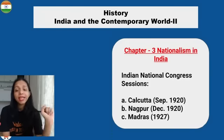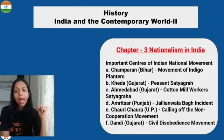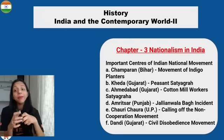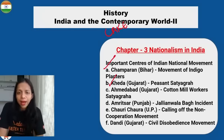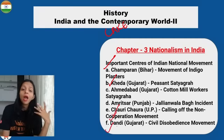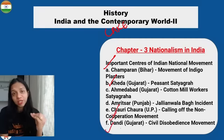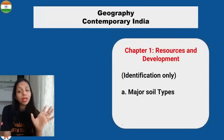For History maps, you will locate and label Indian National Congress sessions — Calcutta, Nagpur, and Madras. Also, important centers of the Indian National Movement like Champaran, Ahmedabad, Kheda, Amritsar, Chauri Chaura where the Non-Cooperation Movement was called off, and Dandi for the Civil Disobedience Movement — these will all be located and labeled.